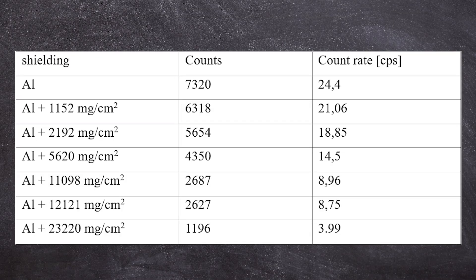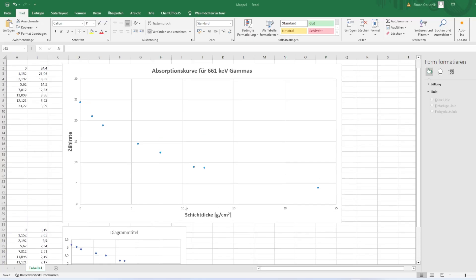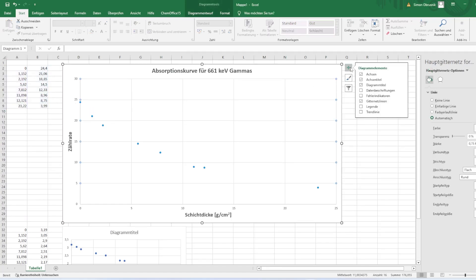These are my raw data. Of course you should subtract the background, though it won't make a big difference. And here I plotted the counting or pulse rate against the thickness of lead in gram per square centimeter. Clearly an exponential fit passes through.